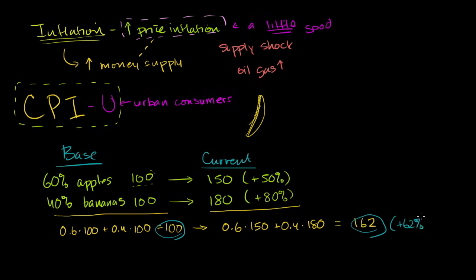plus 62%. And you would have gotten the same result if you took the weighted average of the percentages. If you took 0.6 times 50% plus 0.4 times 80%. In fact, we could do that in our head. 0.6 times 50% is going to be 30%. And then 0.4 times 80% is going to be 32%. 30 plus 32 gives us 62% growth for this basket of goods, which we're assuming is for this urban consumer, from our base year to the current year.